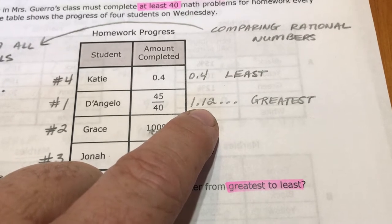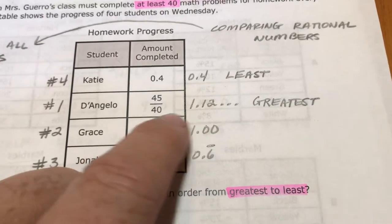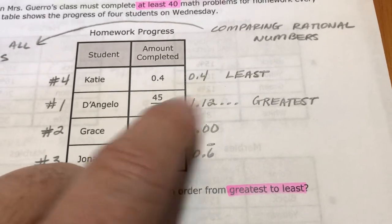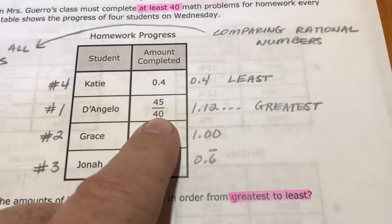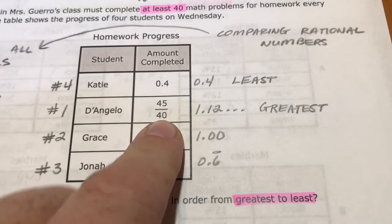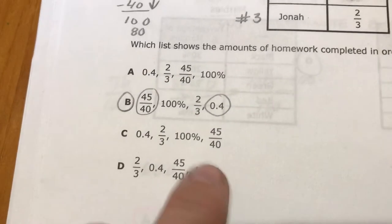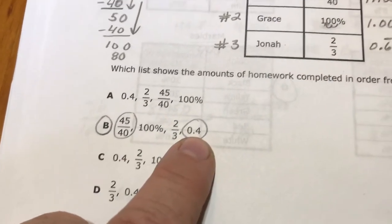So this decimal is longer but I don't need to keep doing it. I just need to find the greatest. Well, no matter how long this gets, it's already going to be the most because it's 1.1 something, and the next biggest one is just 1.0. So that's the biggest. The smallest is 0.4. So I need a list that starts with 45 over 40 and ends with 0.4.